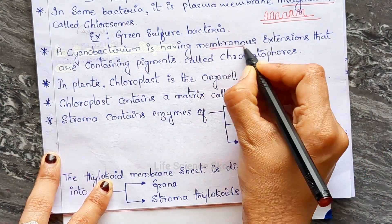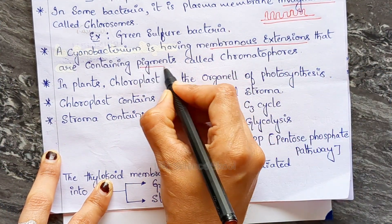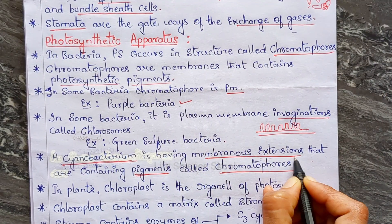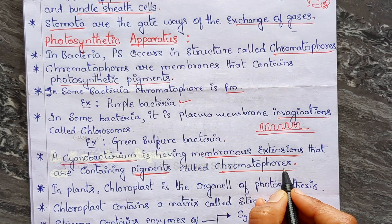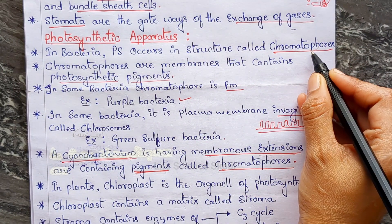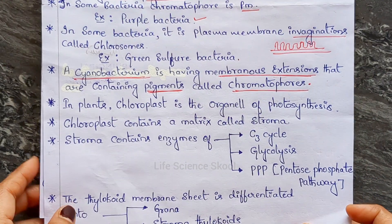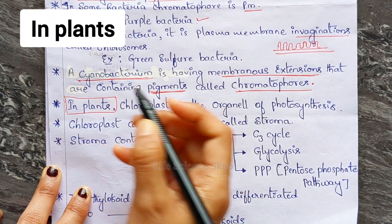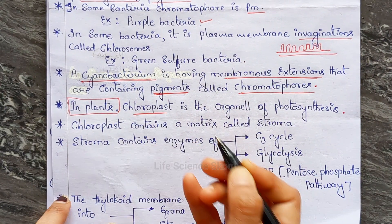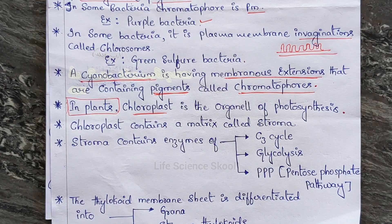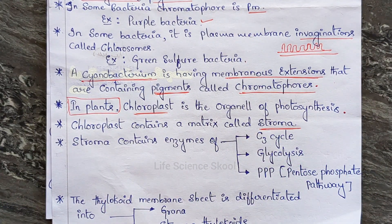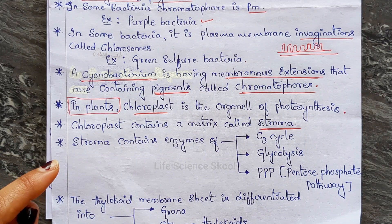Cyanobacteria have membranous extensions containing pigments called chromatophores. So in bacteria overall, photosynthesis occurs in structures called chromatophores. In plants, the chloroplast is the organelle of photosynthesis — it is the structure where photosynthesis takes place. The chloroplast contains a matrix called stroma.